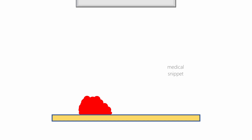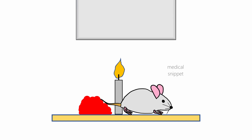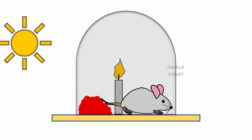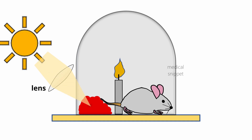On August 1, 1774, Joseph Priestley conducted his most famous experiment. He kept a lump of reddish mercuric oxide inside an inverted glass container. When he focused sunlight on the mercuric oxide using a lens, it burnt and released a gas.